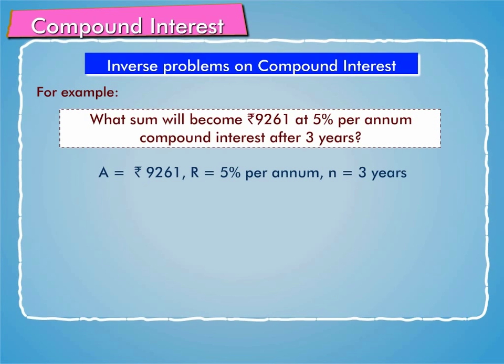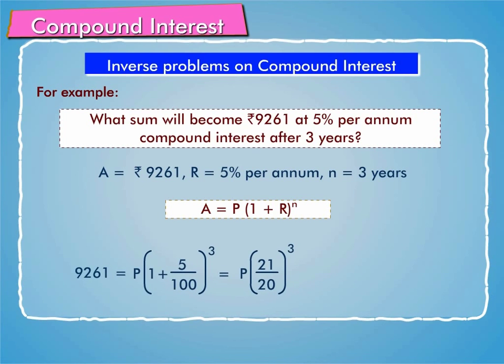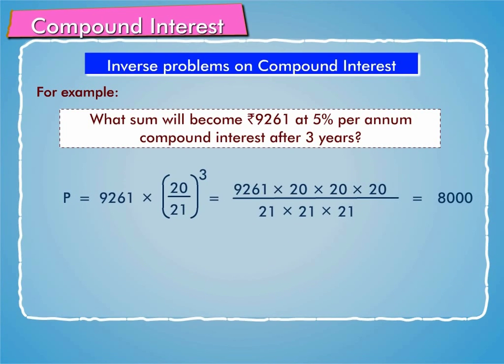After substituting these values in the formula A is equal to P into 1 plus R whole raise to power n, we get 9,261 is equal to P into 1 plus 5 by 100 whole cube, which is equal to P into 21 by 20 whole cube. Therefore,